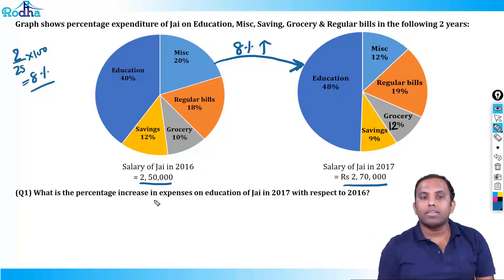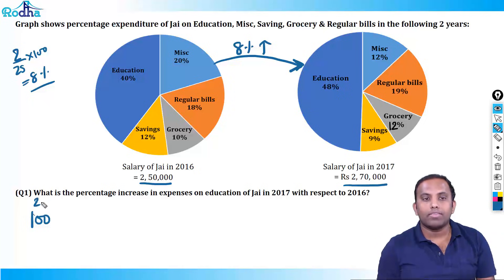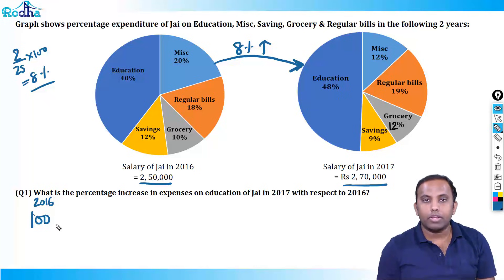What is the percentage increase in expense on education of J? If it was due to a pie chart value increase of 8%, his expense on education will automatically increase by 8% if his education expense in 2016 was 100.